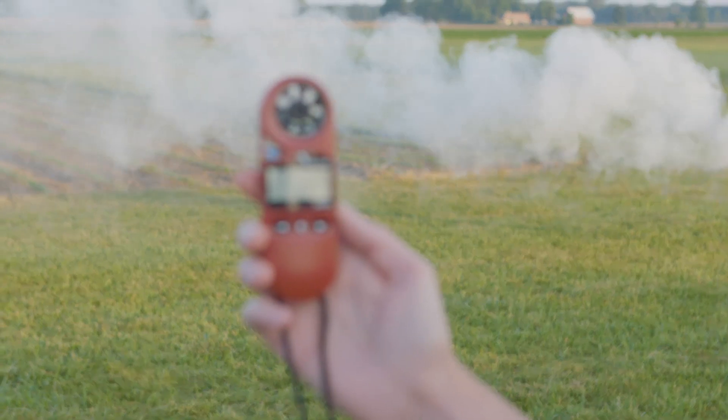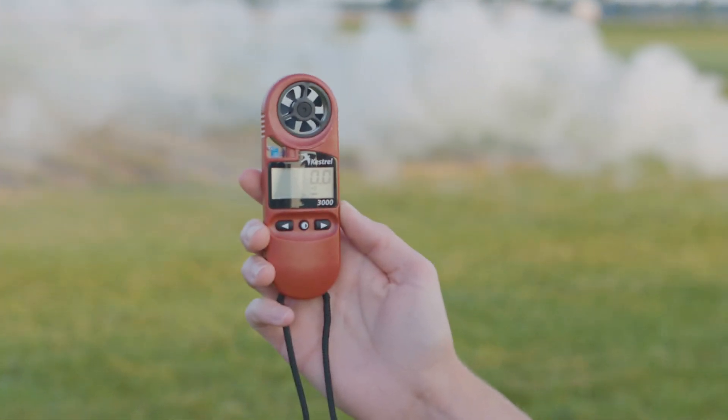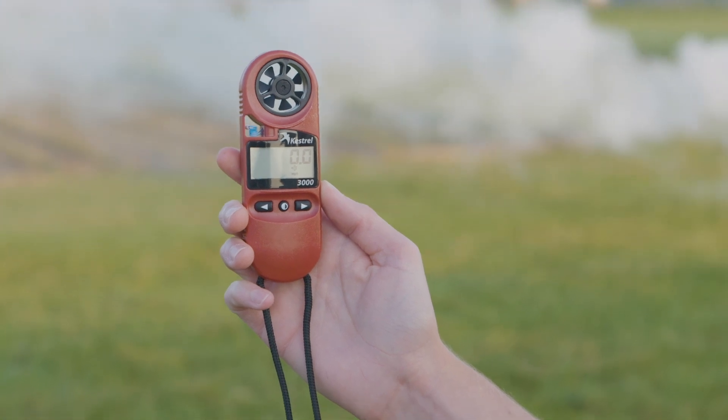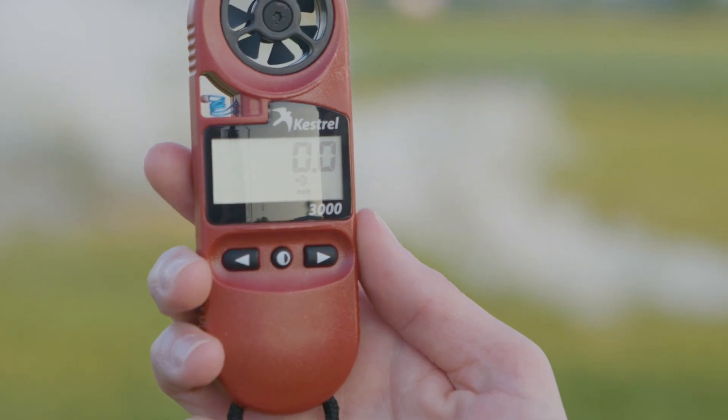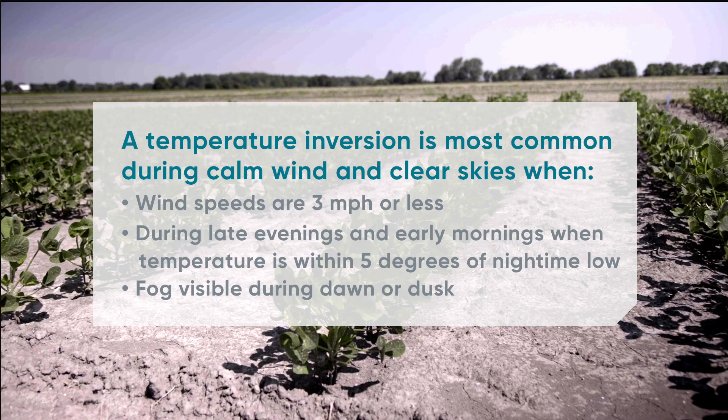As far as when temperature inversions occur, there are a couple of environmental conditions that tend to be high risk. One is very still, calm conditions where you've got less than three miles per hour of wind speed. Second would be either late in the evening or early in the morning, often when the temperature is within five degrees of the overnight low. A third good indicator is ground fog — if you see fog in valleys or low-lying areas, that's also a very good indicator that a temperature inversion may be occurring.